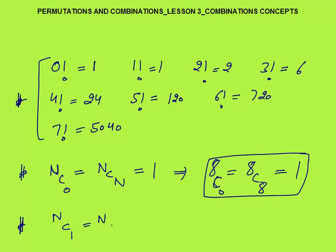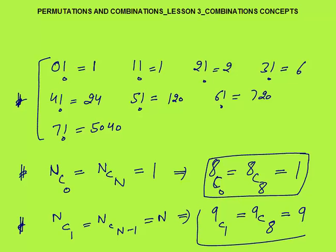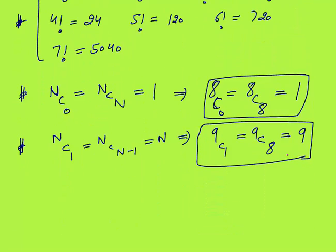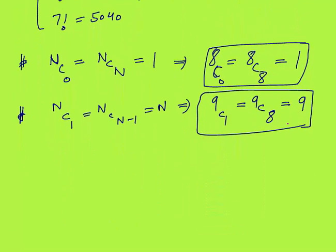NC1 and NCN-minus-1 are both equal to N. For example, 9C1 and 9C8 are both equal to 9. This is a very important identity: whenever you see NC1 or NCN-minus-1, your answer is directly N. So 12C11 would be 12.